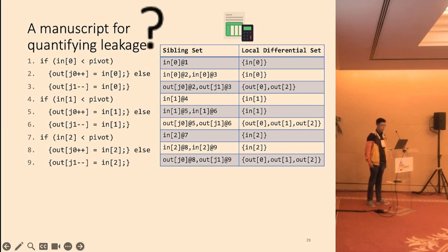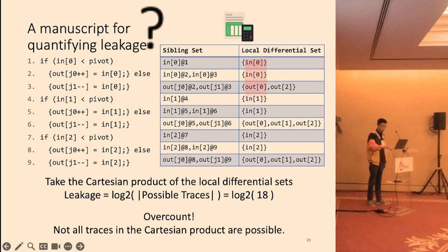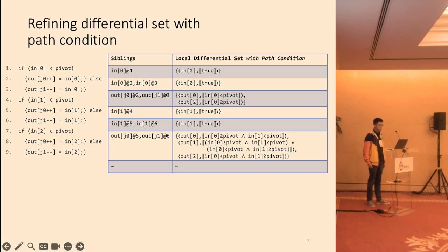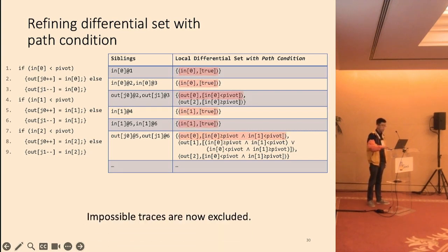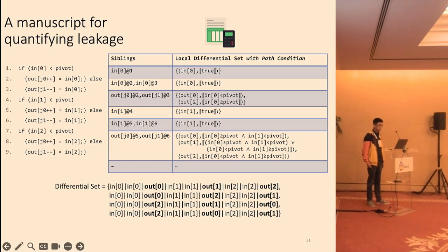We've seen how we can mitigate the leakage. A natural way to quantify the leakage is to take a Cartesian product of the local differential sets and count the size. If we do so, we estimate the leakage to be log2 of 18. However, doing a simple Cartesian product, we overcount the leakage. For example, the combination highlighted in red is impossible as out[0] is accessed multiple times, which can't happen in an actual execution. We therefore refine the differential set by attaching the path condition to every element in the local differential set. We can use the conjunction of path condition to rule out impossible combinations. Using this new table, we are able to compute a set of traces which has size 4, and we conclude that a program leaks two bits, which is indeed the ground truth leakage.